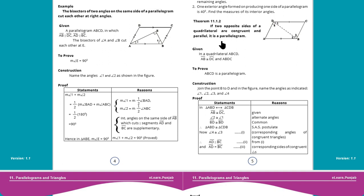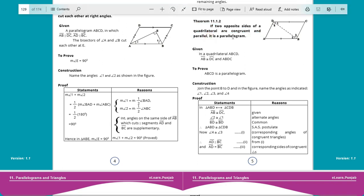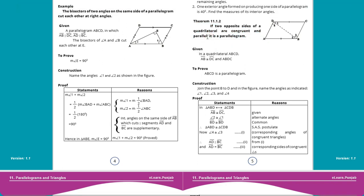Statement: If two opposite sides of a quadrilateral are congruent and parallel, then it is a parallelogram. تو comma سے پہلے والی جو چیز ہے یہ ہمیں given ہے اور comma سے بعد والا ہمیں to prove ہے جو ہم لوگ نے proof کرنا ہے۔ تو ہم ایک quadrilateral draw کر لیتے ہیں۔